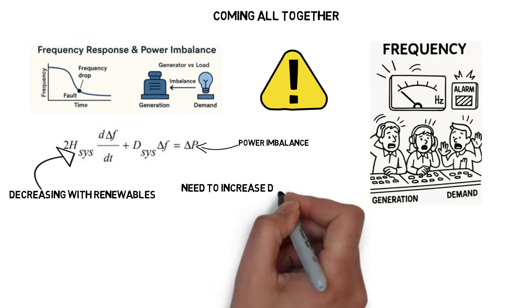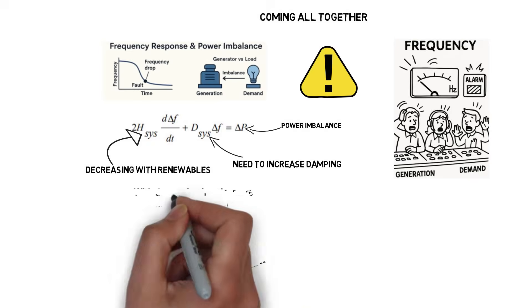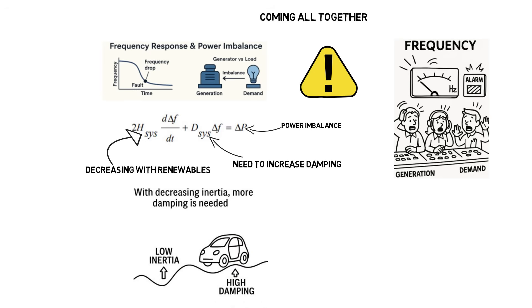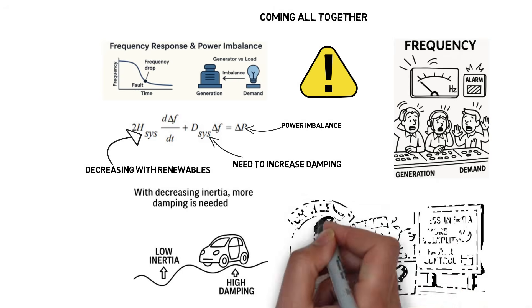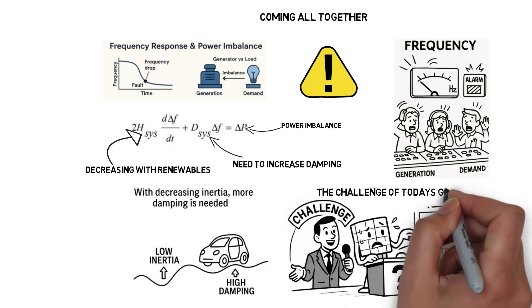Now picture this. If inertia is low, like a lightweight car, it's more prone to sudden jolts and instability. To keep it under control, we need stronger damping, like high-performance dampeners, to absorb the shock and restore balance. That's the challenge of today's grid: less inertia, more volatility, and a growing need for smarter, faster control.